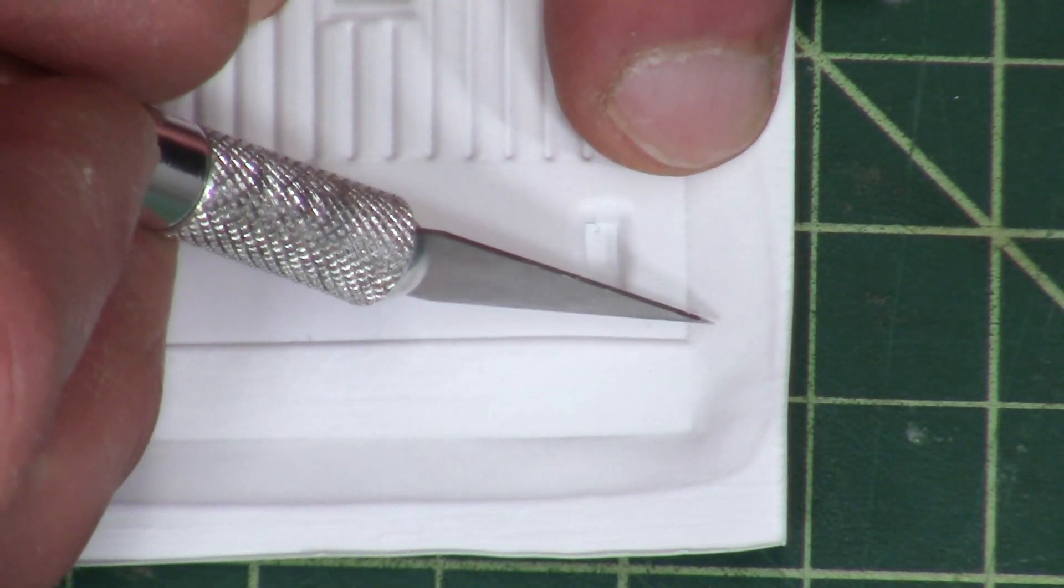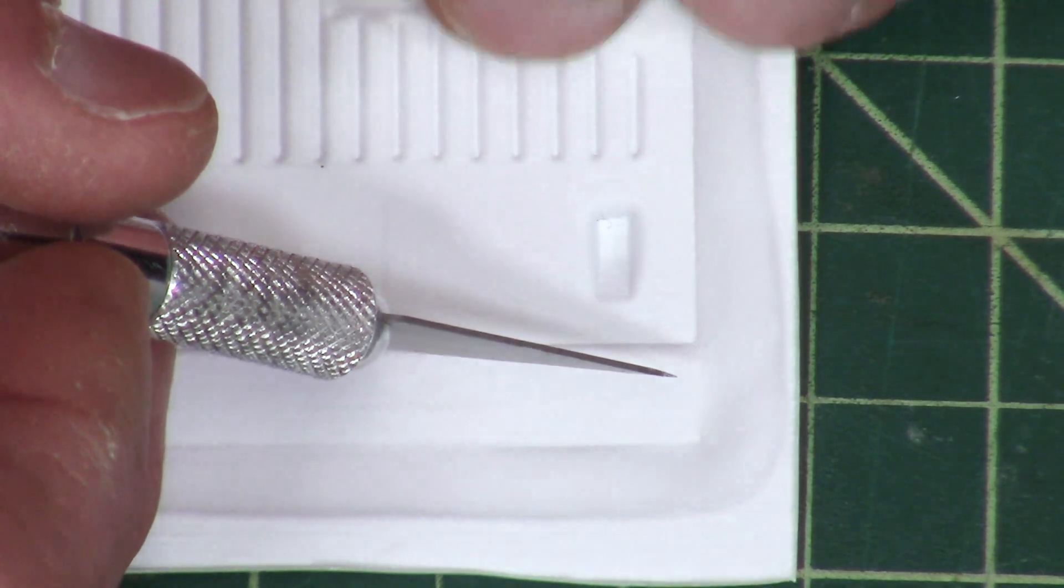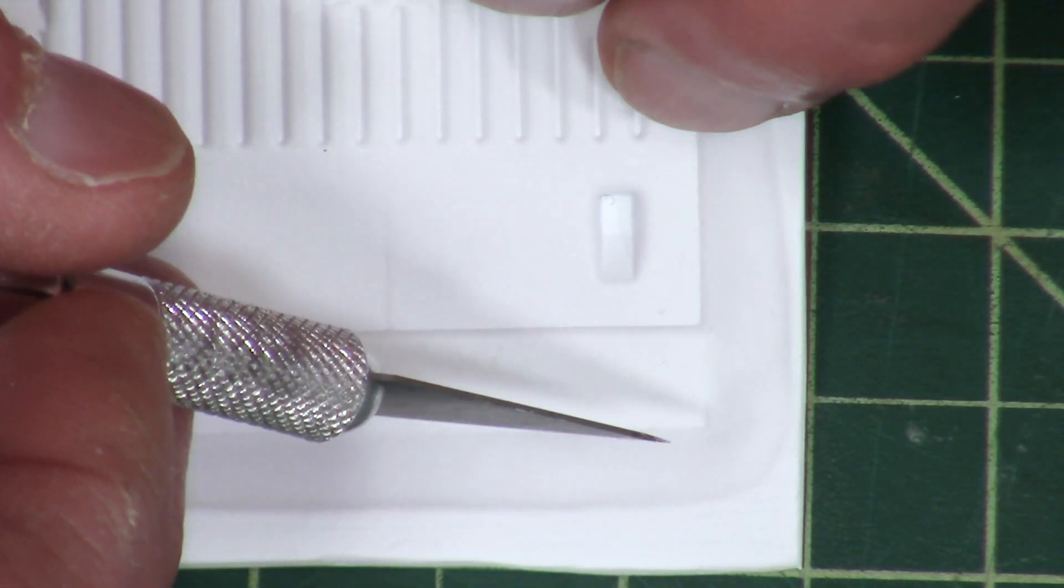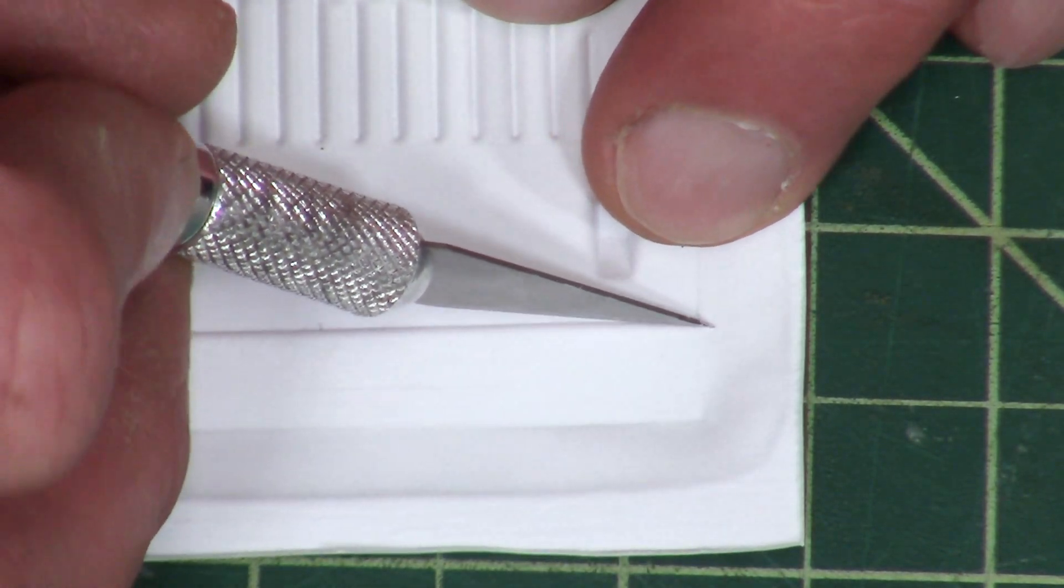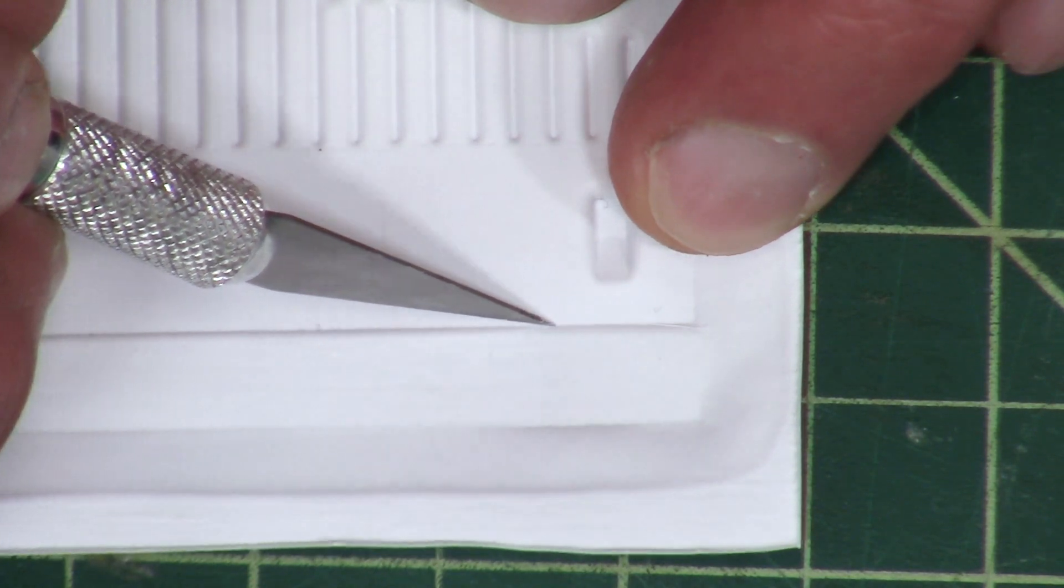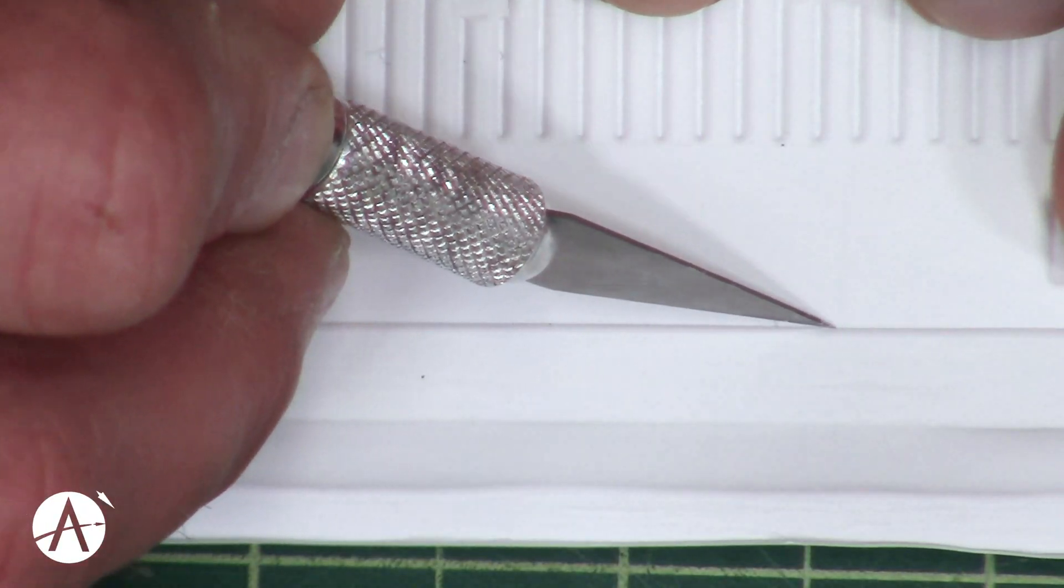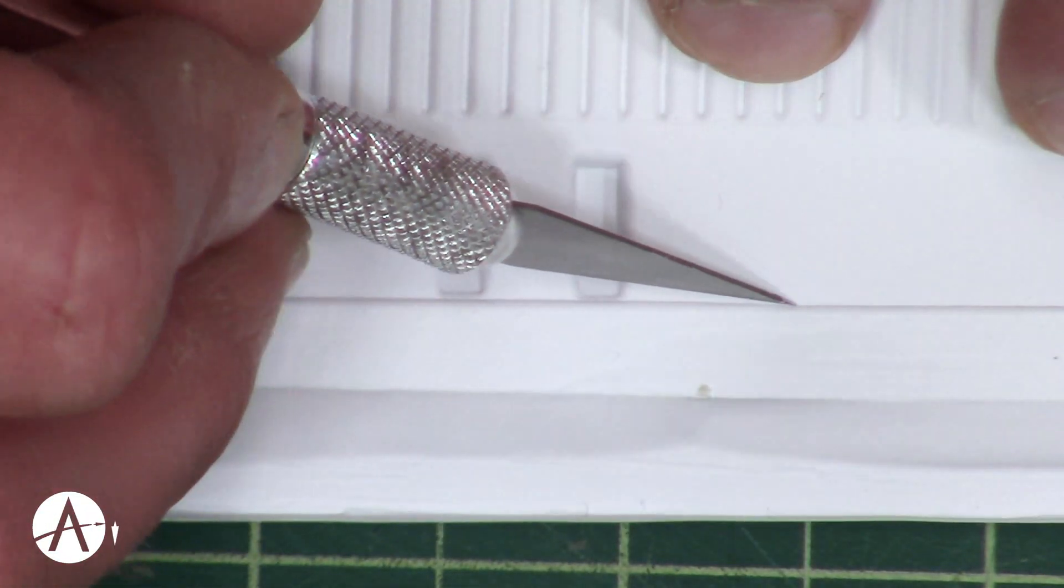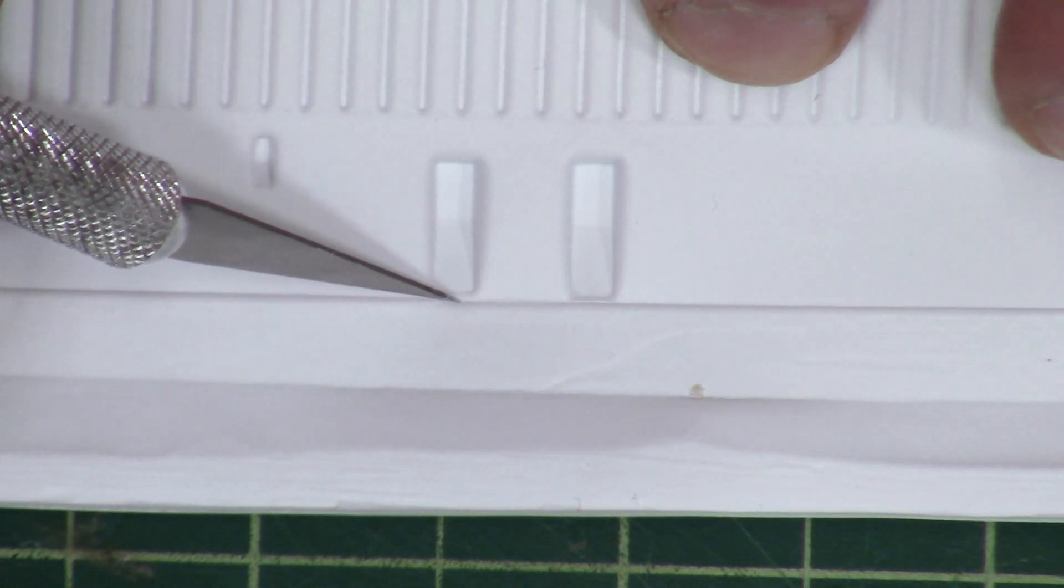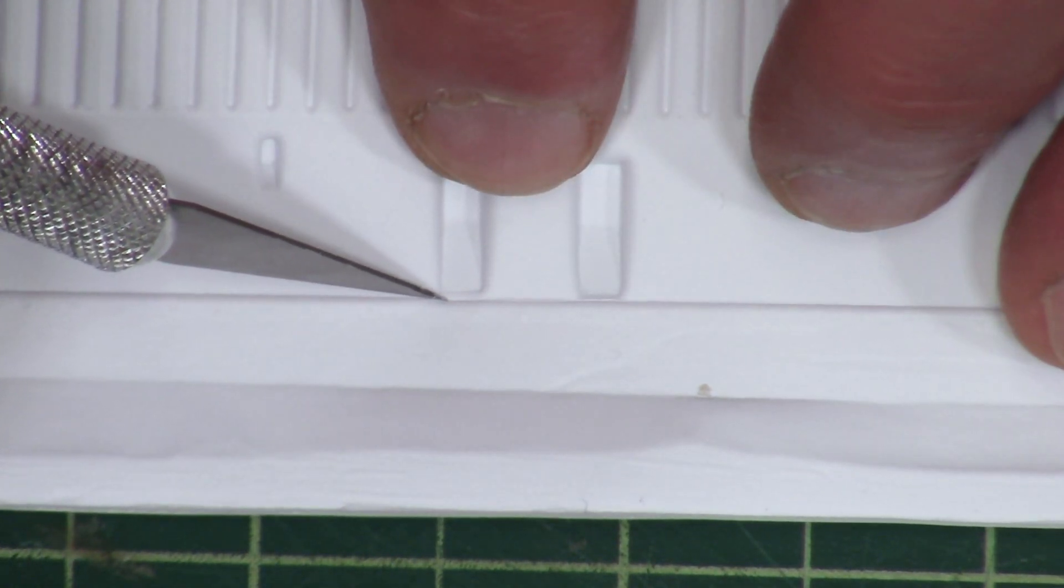So as before, I'm going to start in the corner and we're going to gently pick it up from the backside and run that blade in there. Just go nice and slow when you get to those two antennas that are raised there.